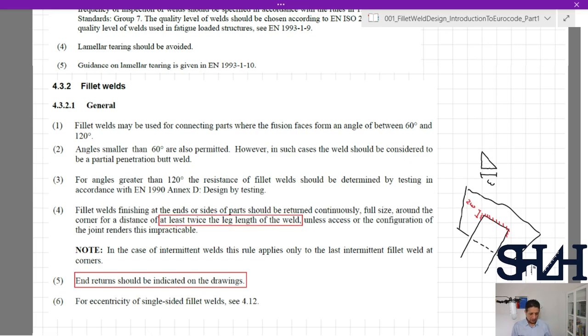Unless access or the configuration of the joint renders this impracticable. In case of intermittent welds—the welds that you weld for a distance, then leave the rest free, and then start to weld again—this rule applies only to the last intermittent fillet weld at corners. And returns should be indicated on the drawings always.